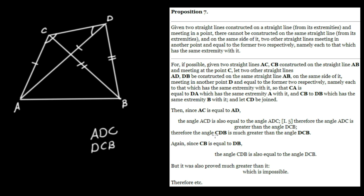Therefore the angle CDB is much greater than the angle DCB. Why is that? Have a look at angle CDB, and notice that the angle CDA is a part of that one — so angle CDB must be still greater, and hence CDB, as Euclid says, is much greater than DCB.